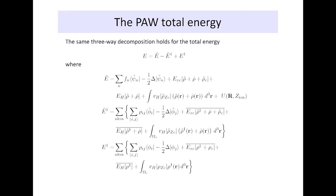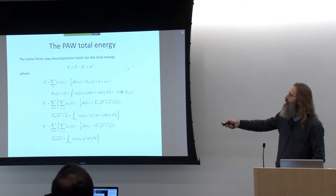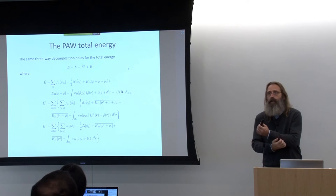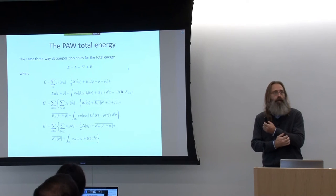In that sense, our total energy actually decomposes into three contributions. We saw this for local operators and for non-local operators. In total, we have a part of our total energy on the plane wave grid and two parts stemming from the radial grids inside the PAW spheres.